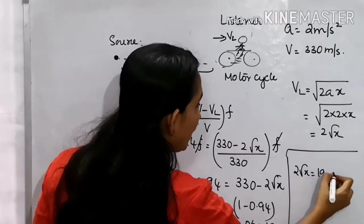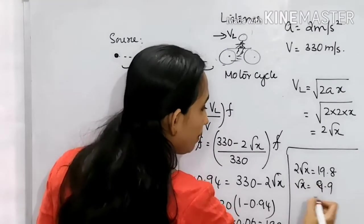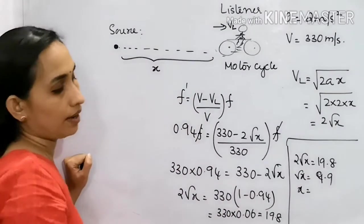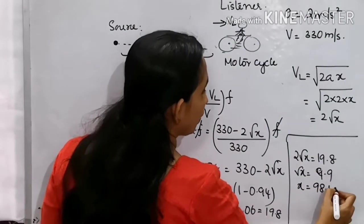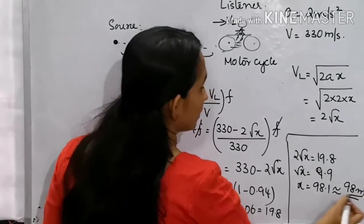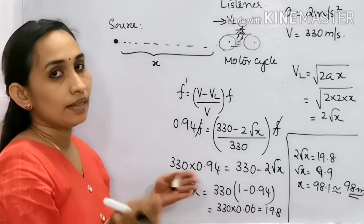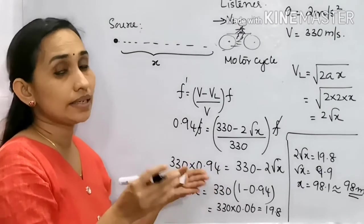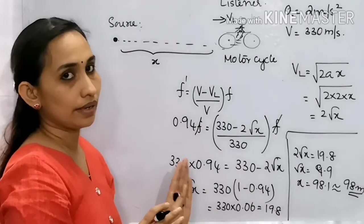Root x is equal to 9.9, x is equal to 9.9 whole squared, 98.1 approximately. Your answer will be 98 meters. This is the answer. So if we have Doppler effect equations we will apply. Answer will be 98 meters. I hope it is clear.